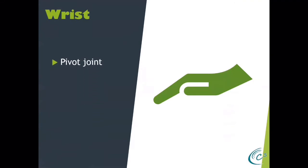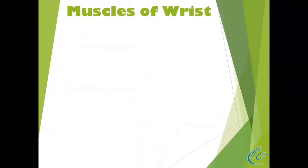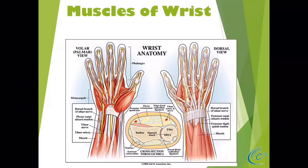Then we have the wrist, known as a pivot joint. It involves the distal aspect of the ulna and radius — those same two bones we talked about at the elbow — and the carpal bones. The wrist and hand are very complex structures. This is what separates us from everybody else in the animal kingdom. We have a huge number of muscles requiring different functions. You can see the blood circulation in red and nerve innervations in yellow throughout the hand — a very complex clinical situation.